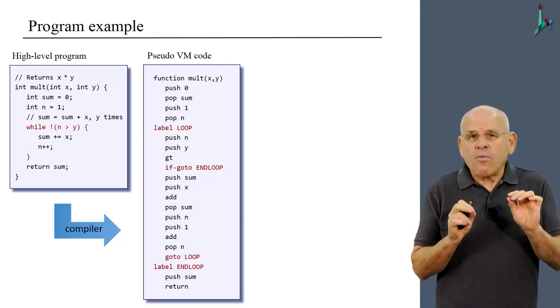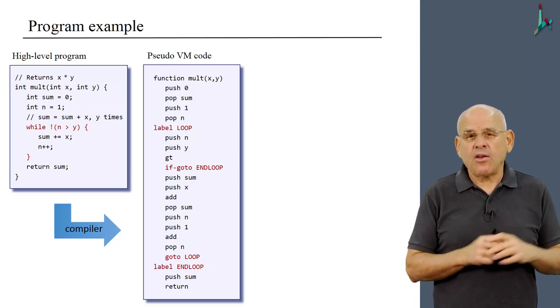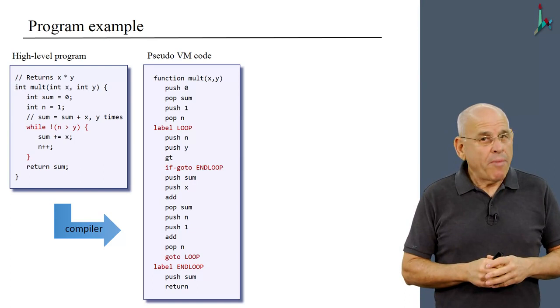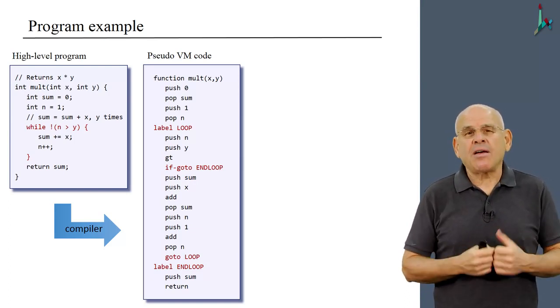You see that what the compiler is doing is it's taking this while loop and rewrites it using goto commands. And in order to achieve this rewriting, the compiler also has to invent and generate some labels.